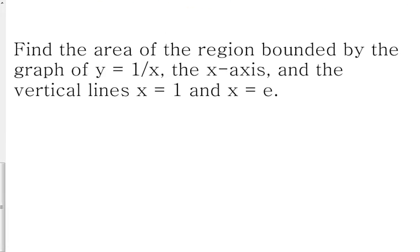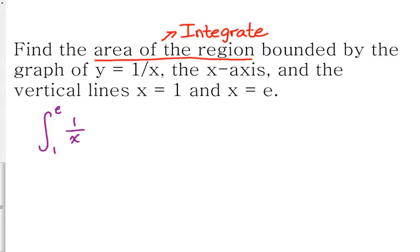One more example and then I'm going to let you just do a bunch of practice. Find the area of the region bounded by the graph of y equals 1 over x and the x-axis and the vertical lines x equals 1 and x equals e. They don't give us the integral but they're describing the integral to us. If you see area of the region you should think integrate. Bounded by the graph of 1 over x, so that means that's my function. I'm integrating 1 over x. The vertical lines x equals 1 and x equals e, that's telling me what my limits are. I start at 1 and I stop at e which is approximately 2.7 something.